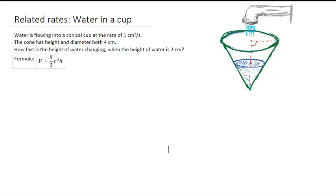What's happening is water is flowing into the cup at a rate of 1 centimeter cubed per second, at a constant rate. So that is dV by dt. We know that dV by dt, the rate of change of volume with respect to time, is 1 cubic centimeter per second.